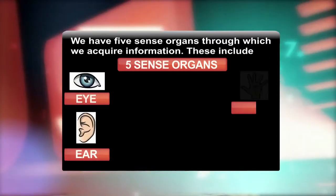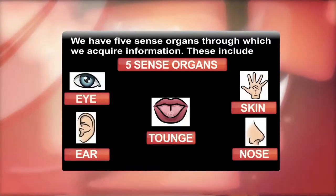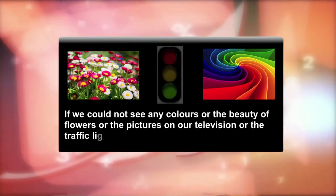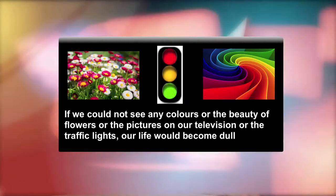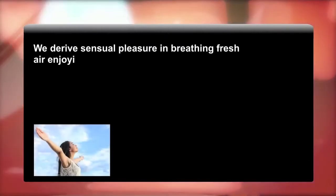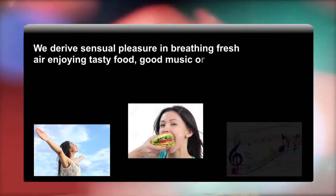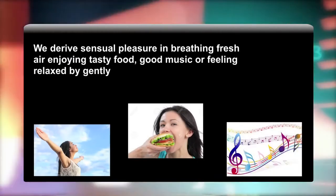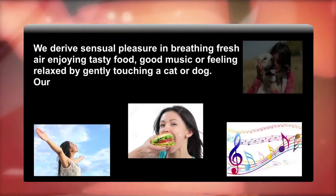We have five sense organs through which we acquire information. These include eye, ear, skin, nose and tongue. If we could not see any colors or the beauty of flowers or the pictures on our television or the traffic lights, our life would become dull and risky. We derive sensual pleasure in breathing fresh air, enjoying tasty food, good music or even feeling relaxed by gently touching a cat or a dog.